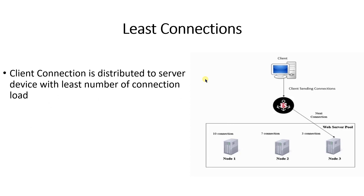Least connection: as the name implies, in this load balancing method, client connections are distributed to the server device with the least number of connections. Node one has 10 connections, node two has seven connections, and node three has three connections. The load balancer will shift the request to the server device with the least connections. Since node three has only three connections, the request will go to server three. This method considers server device performance and supports node and pool member assignment.